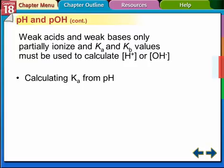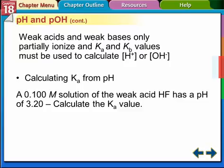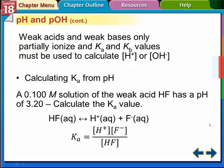So we can do an example problem like this. We're going to calculate the acid constant from the pH. So we have a situation like this. We have a 0.1 molar solution, molarity of a weak acid. Hydrofluoric acid has a pH of 3.2. We want to calculate the Ka value. So how do we do that in this problem? So we have to remember what the Ka value was, right?